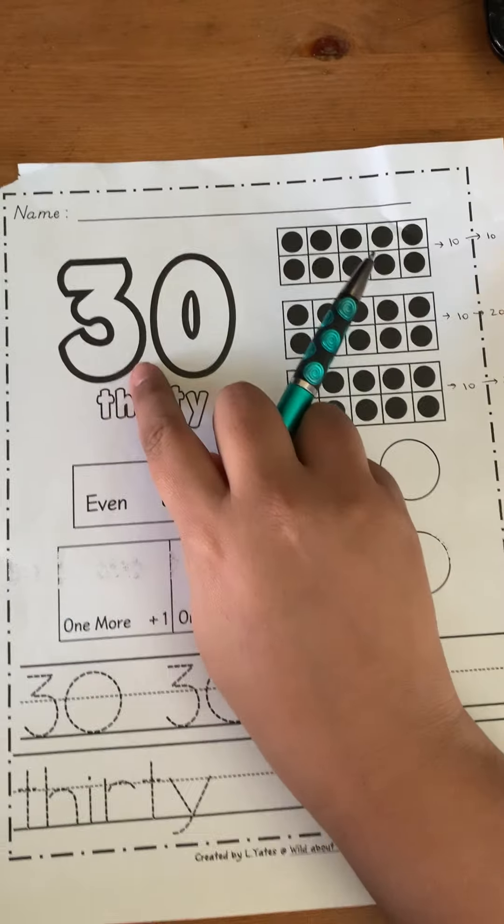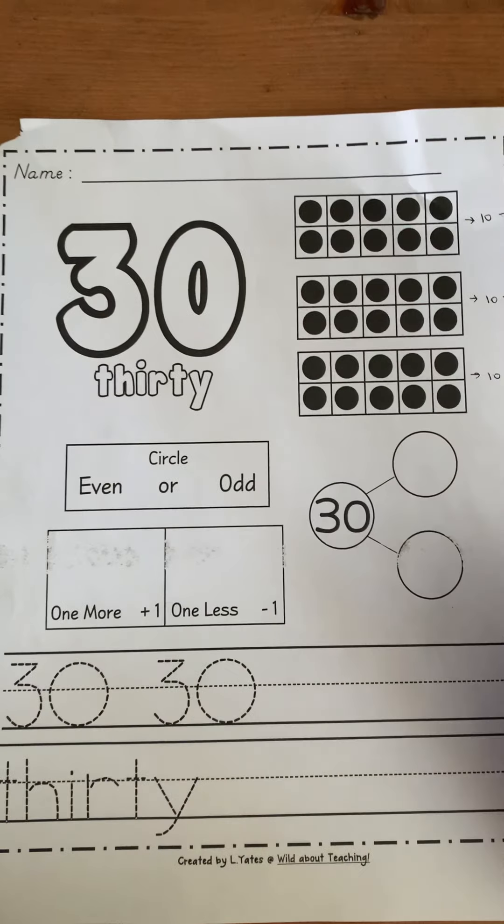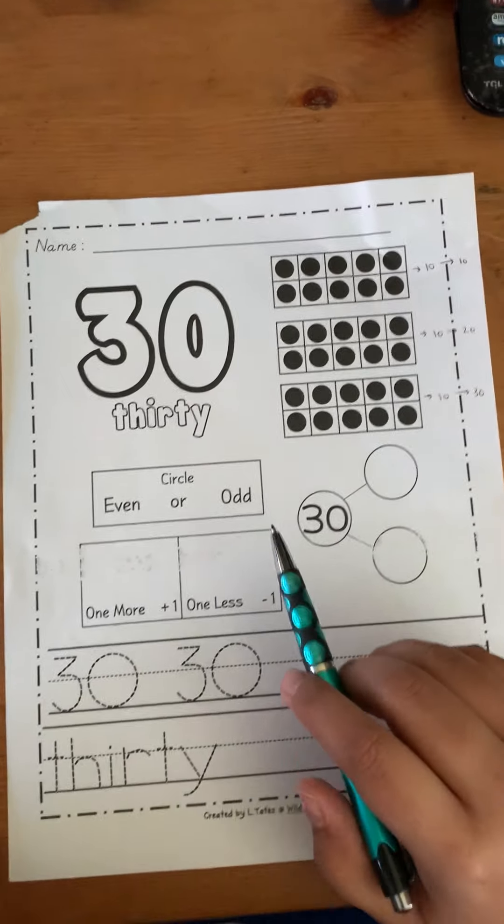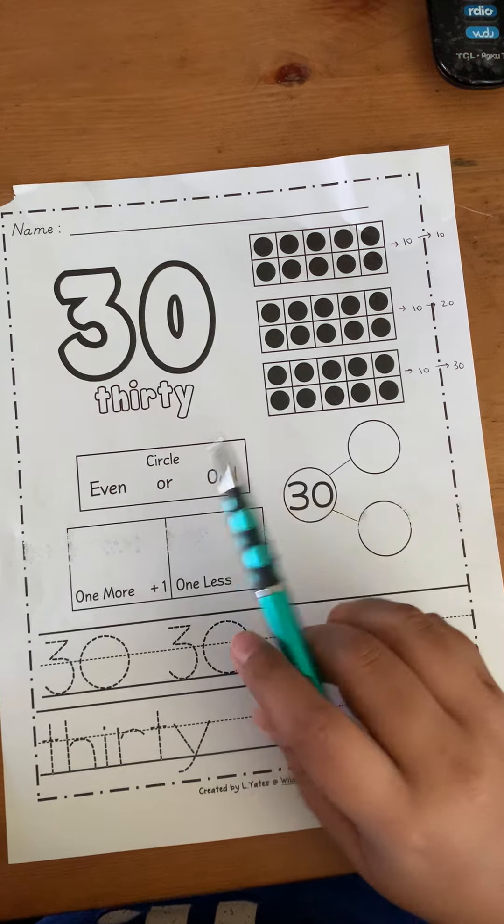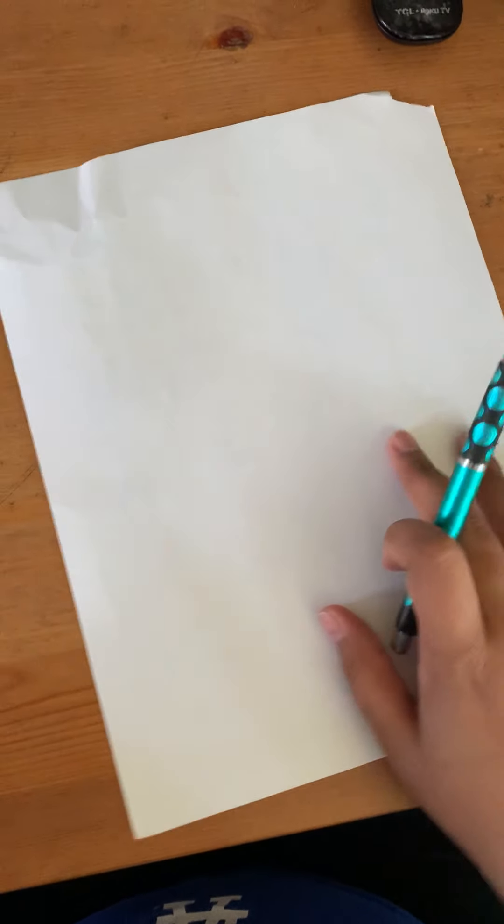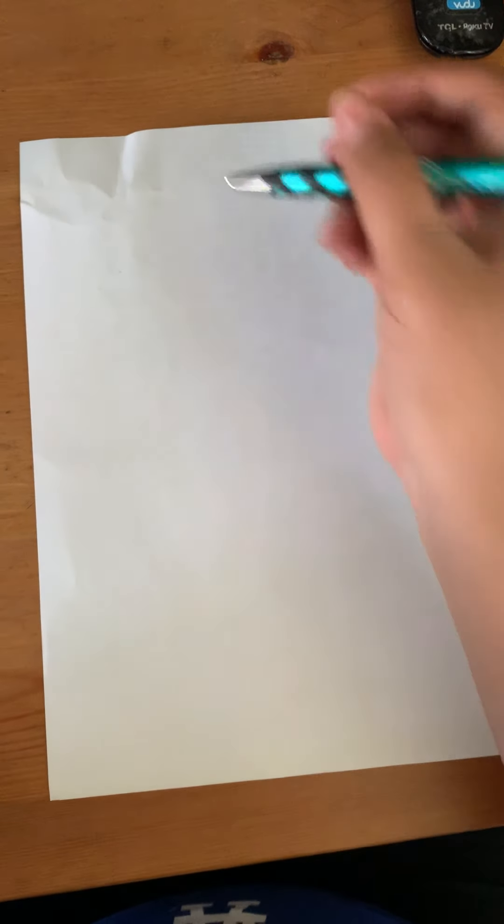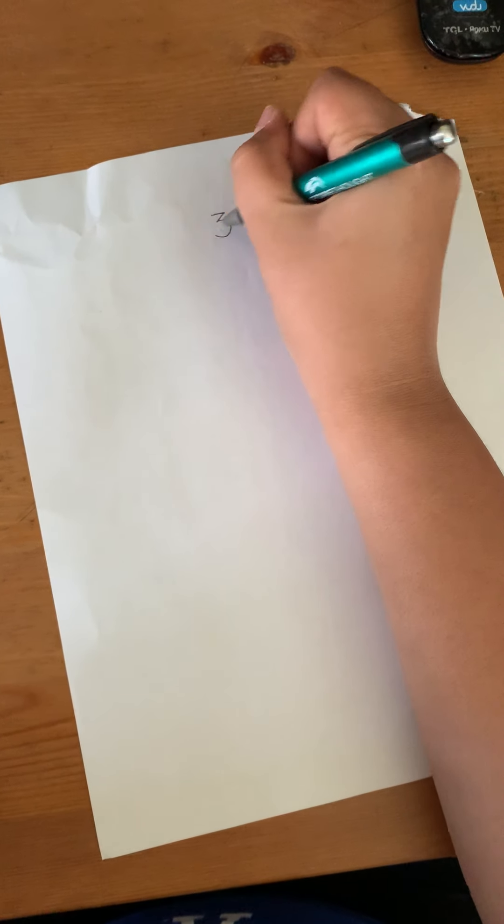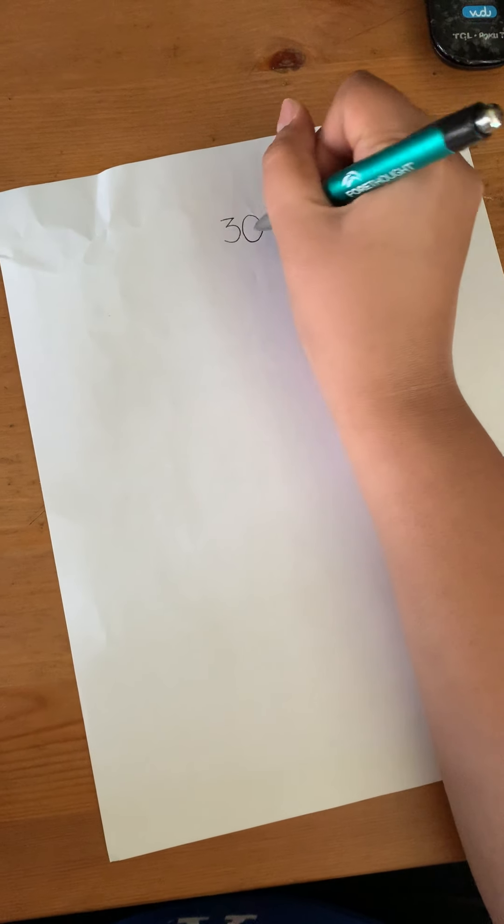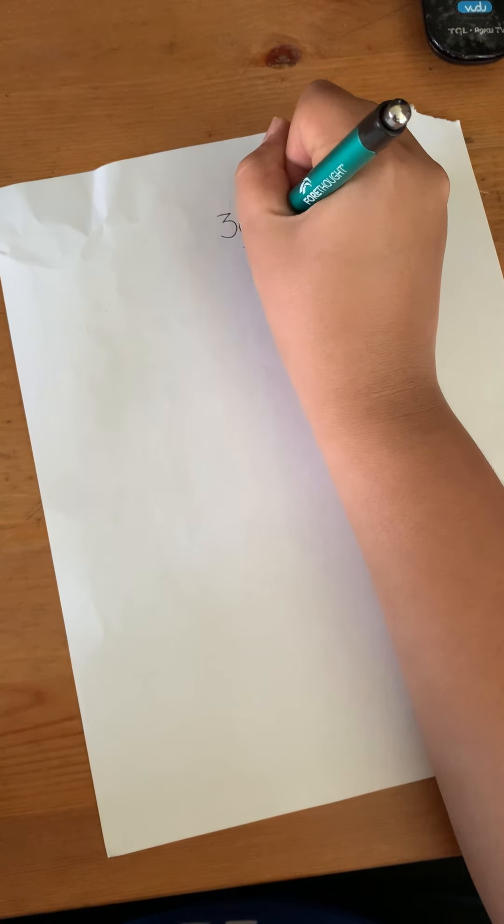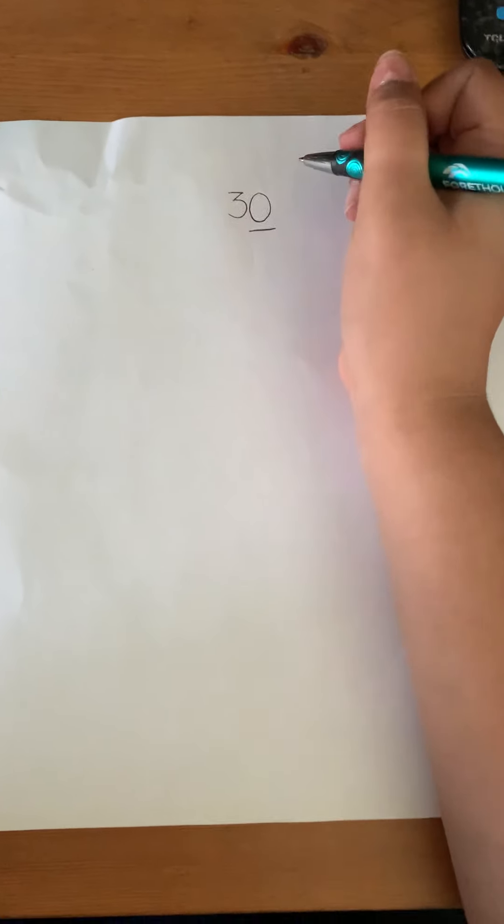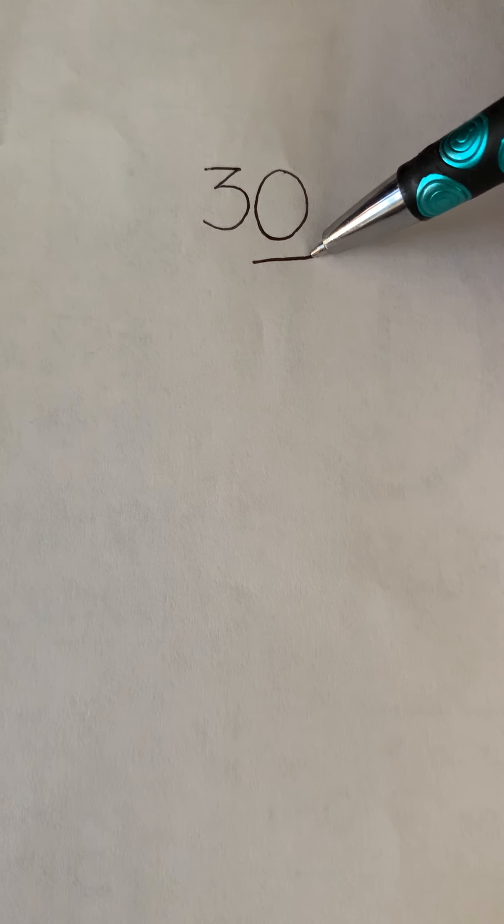Just like our number of the week, 30. Then we are going to go ahead and do our even or odd. So I'm going to turn my page around. And we know that our number is 30. And in a number that has two numbers standing together, that's a double digit number. There's one, two. But we're going to look at that last number. We're going to look at the zero.